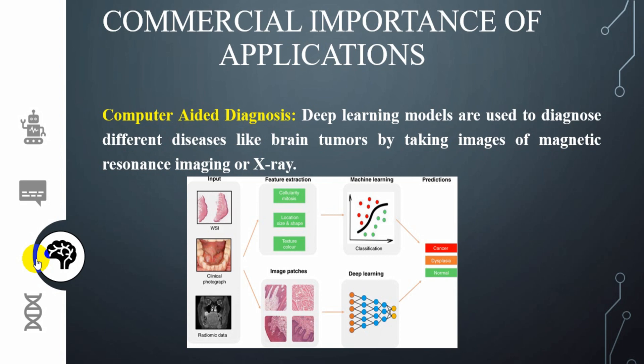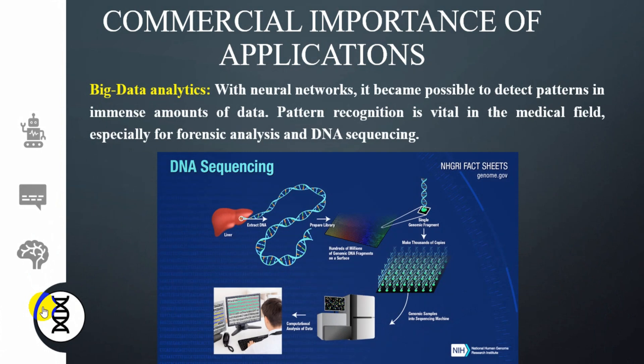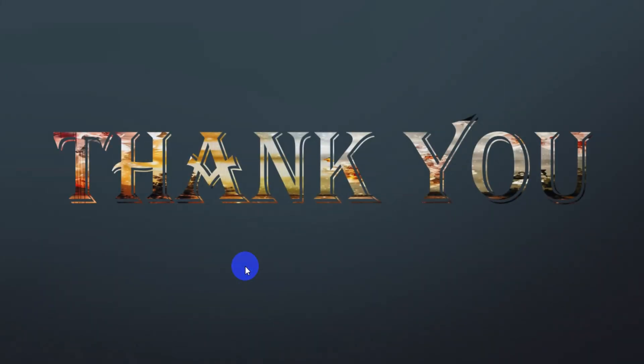This is very important for medical use cases. For example, deep learning models are used to diagnose brain tumors by analyzing MRI images. With neural networks, it has become possible to detect patterns in immense amounts of data, enabling use cases that would not have been possible with traditional statistical methods. Pattern recognition is vital in the medical field especially for forensic analysis and DNA sequencing, and has even been used to develop vaccines to battle the COVID-19 virus. That's all for today's video — this was only the introduction, and later we are going to learn more about pattern recognition. Thank you.